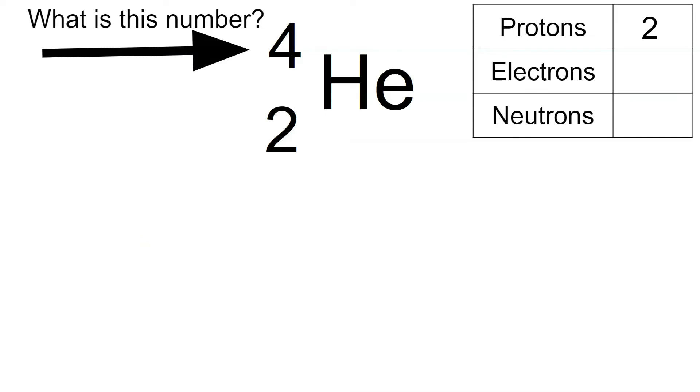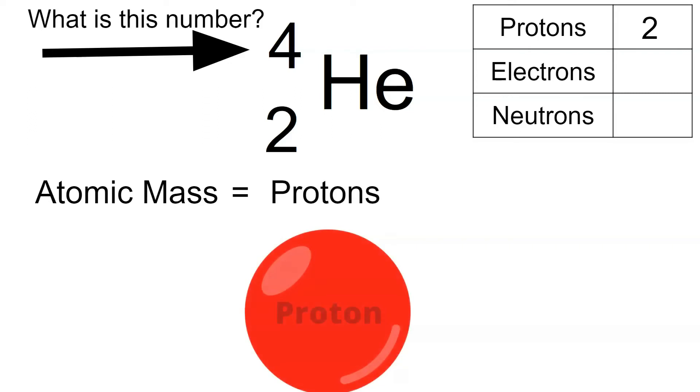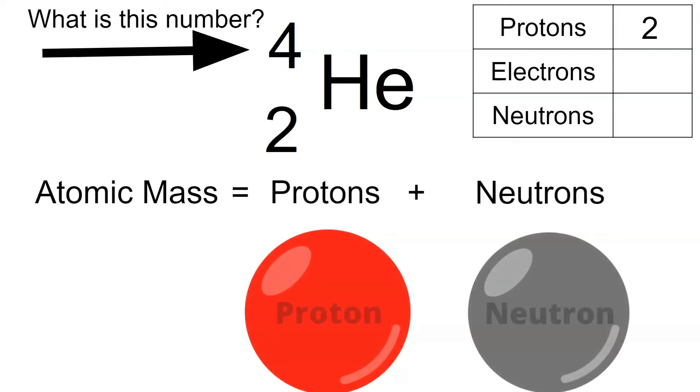Now what is that number? That number is the atomic mass. And the atomic mass is equal to the protons plus the neutrons.